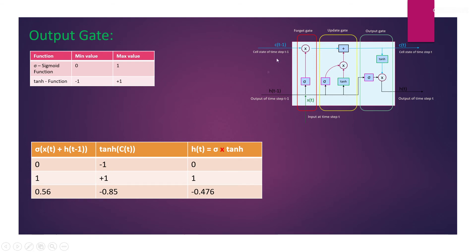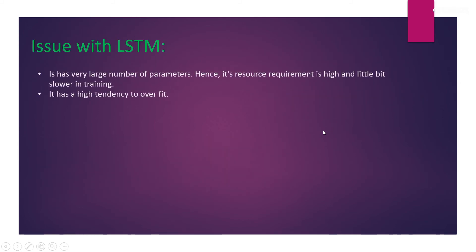As you can see, we have many activation functions and weights and biases across the gates. It was observed that the LSTM network has a high resource requirement and is also a bit slower in training. It was also observed that it has a high tendency to overfit. To deal with these issues, the GRU network was designed.